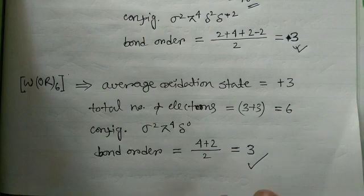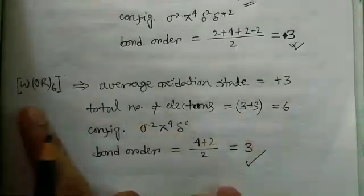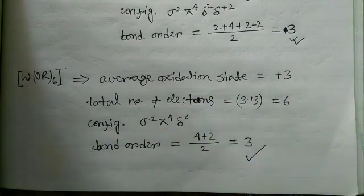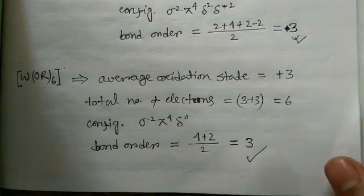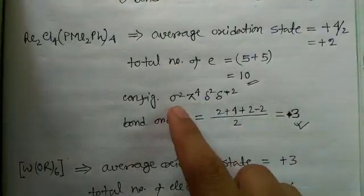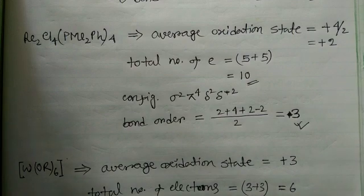The calculation is straightforward: determine the oxidation state of the metal, calculate the number of electrons available for metal-metal bond formation, fill them into the sigma, pi, and delta orbitals in order, and then calculate the bond order. I hope you understood how to calculate the metal-metal bond order. Thank you for watching and best of luck.